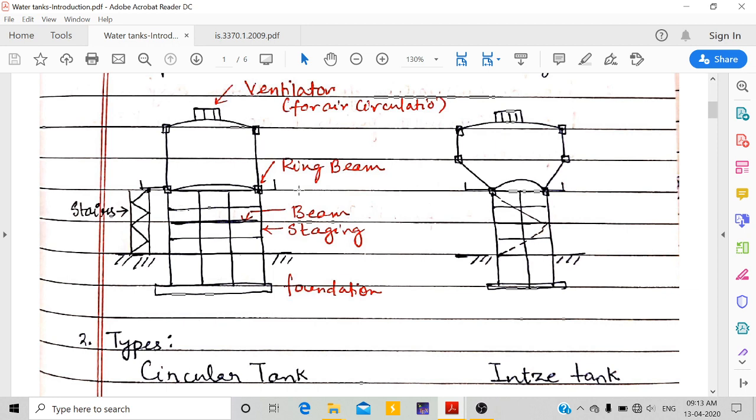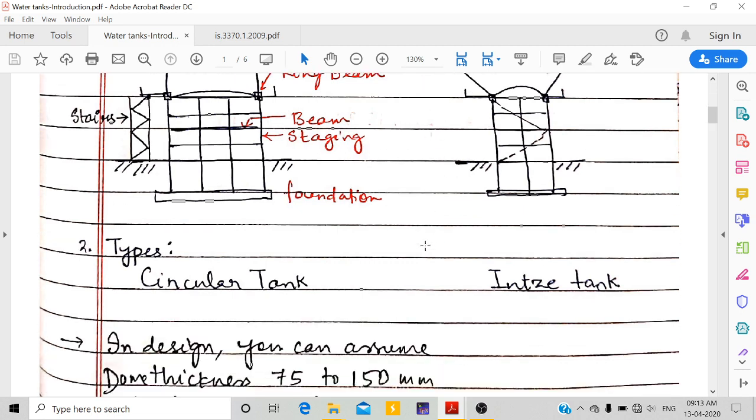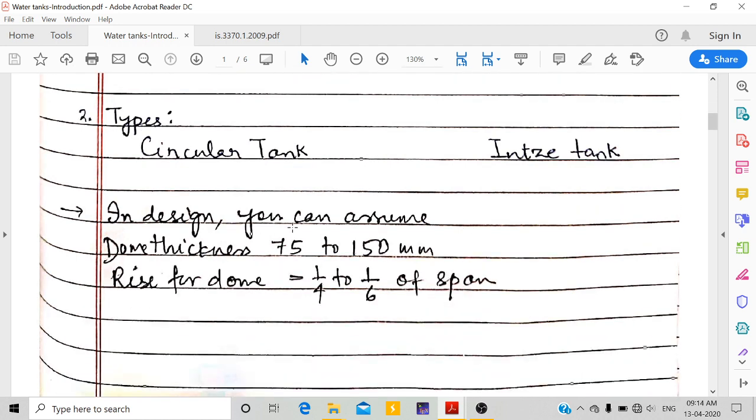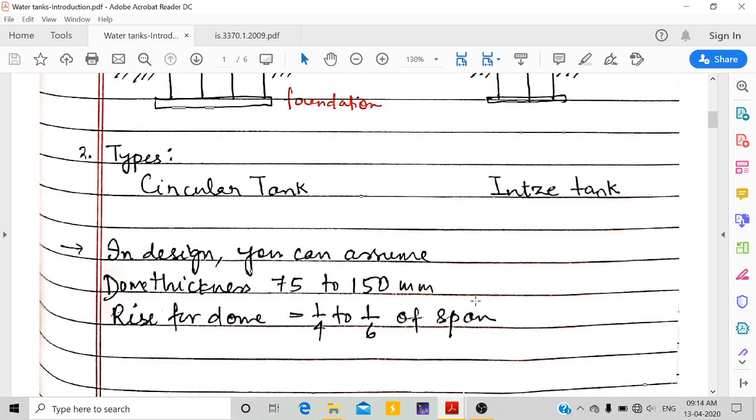In case of an inch tank, it's the same, but the difference is here: after the circular portion, an extra conical slab is given, and then the bottom dome. For design, you can assume dome thickness from 75 to 150 mm, and rise is 1/4th to 1/6th of span. This height is the span.